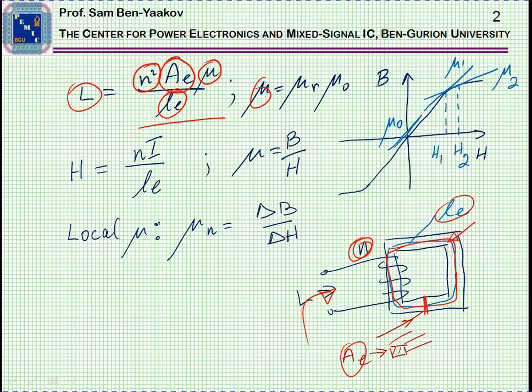Mu is actually the product of the initial or vacuum or air permeability times the relative permeability. That is how much is the actual permeability larger than the reference one.